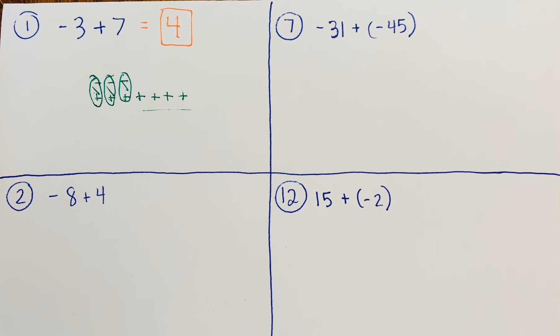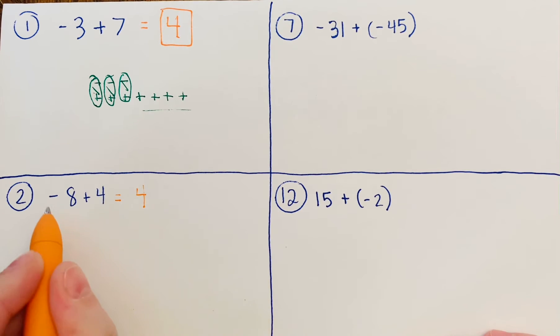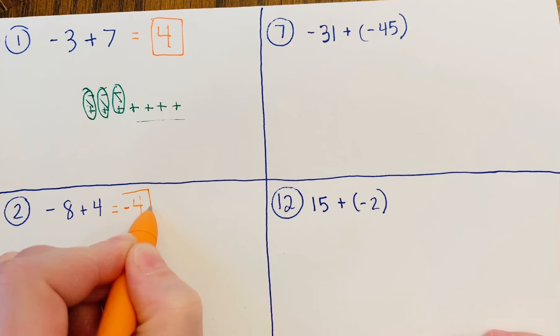Number 2 is similar—we have a positive and a negative again, so different signs. Find the difference: 8 - 4 = 4. But this time eight is bigger than four and eight is negative, so you have more negatives than positives. Your answer is -4.